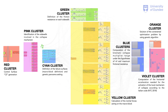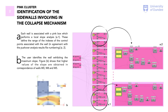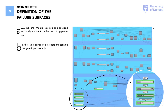I am representing the visual program, which is referred to the second part of the workflow algorithm. It is structured in eight logical parts — clusters — ranging from the identification of the macro blocks to the computation of the horizontal acceleration needed for the activation of the local mechanism of collapse. The first cluster uses the results of the pushover analysis to generate the control surface. In the second cluster, each wall is associated with a pink box, where the identification of the side walls involving the collapse mechanism happens. The third cluster defines the failure phases, and some sliders define the genetic parameters.